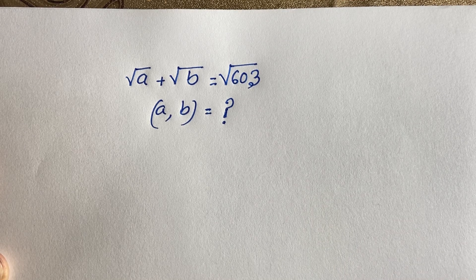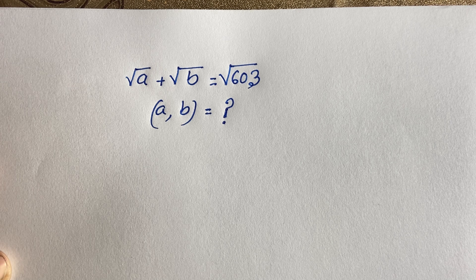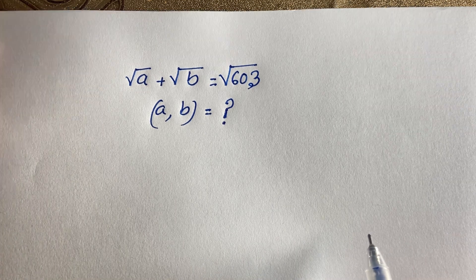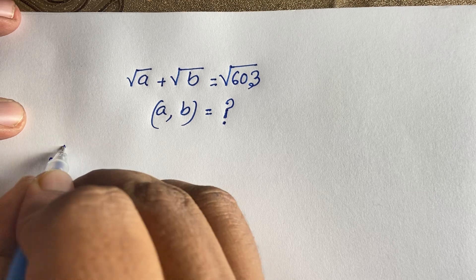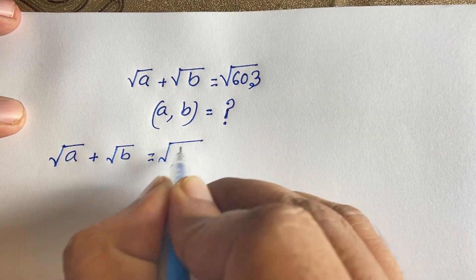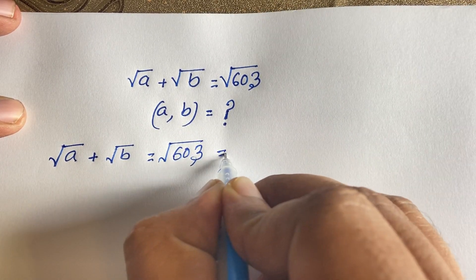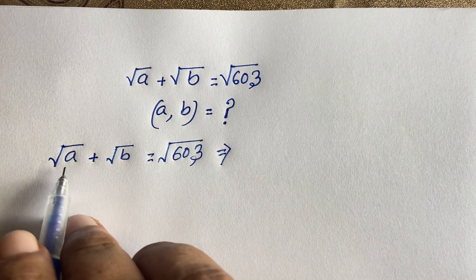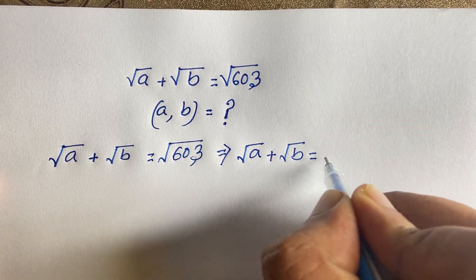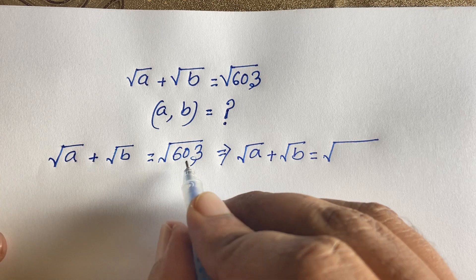Hello everyone. In this video we have solved this interesting math olympiad question. The question is: square root of a plus square root of b is equal to square root of 603. Given that a and b are integers, what are they? Let's start — our equation is √a + √b = √603.